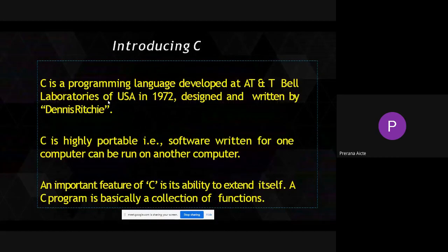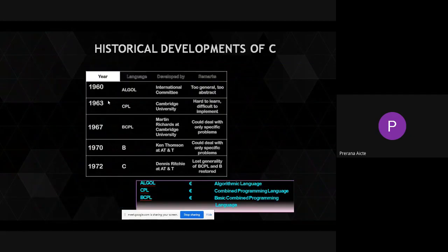As you know, C was developed by Dennis Ritchie in 1972. It is a highly portable language. So the historical development of the C language.